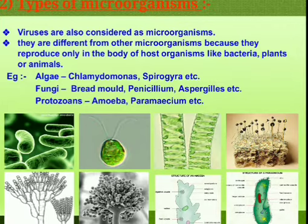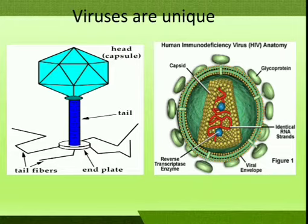Viruses are also considered microorganisms. They are different from other microorganisms because they reproduce only in the body of host organisms like bacteria, plants, or animals. Viruses are unique — they are found in non-living things like salt and sugar, and they can be crystallized and stored in jars for years. But when they come in contact with a suitable plant, animal, or bacteria, they show the characteristics of a living organism. They infect the cell and quickly multiply. Therefore, they are considered on the borderline between living and non-living things.